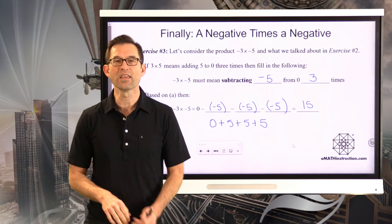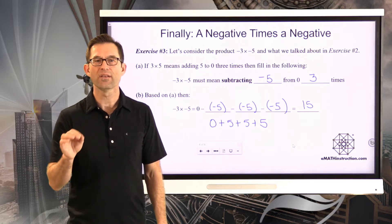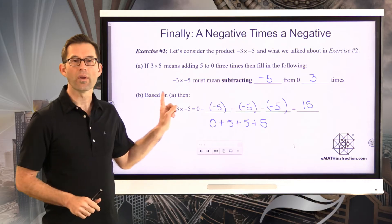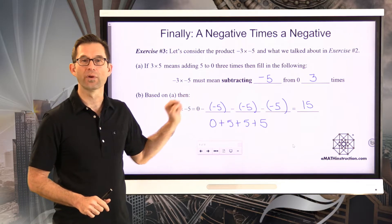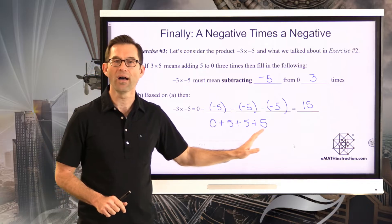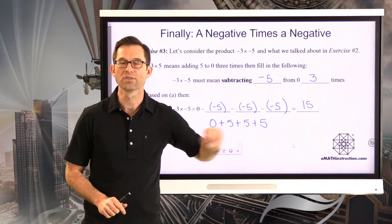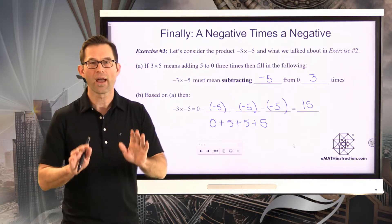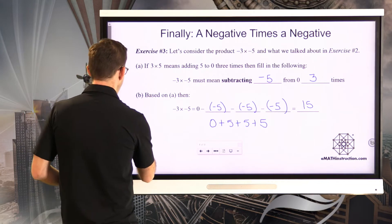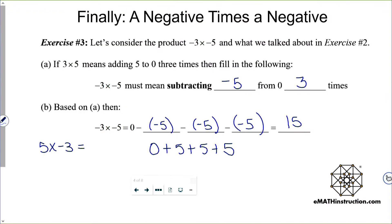So negative 3 times negative 5 equals 0 minus negative 5 minus negative 5 minus negative 5, which becomes 0 plus 5 plus 5 plus 5, equaling 15. This makes sense — when we subtract a negative it turns into adding a positive. So subtracting negative 5 three times is the same as adding positive 5 three times, giving us 15.